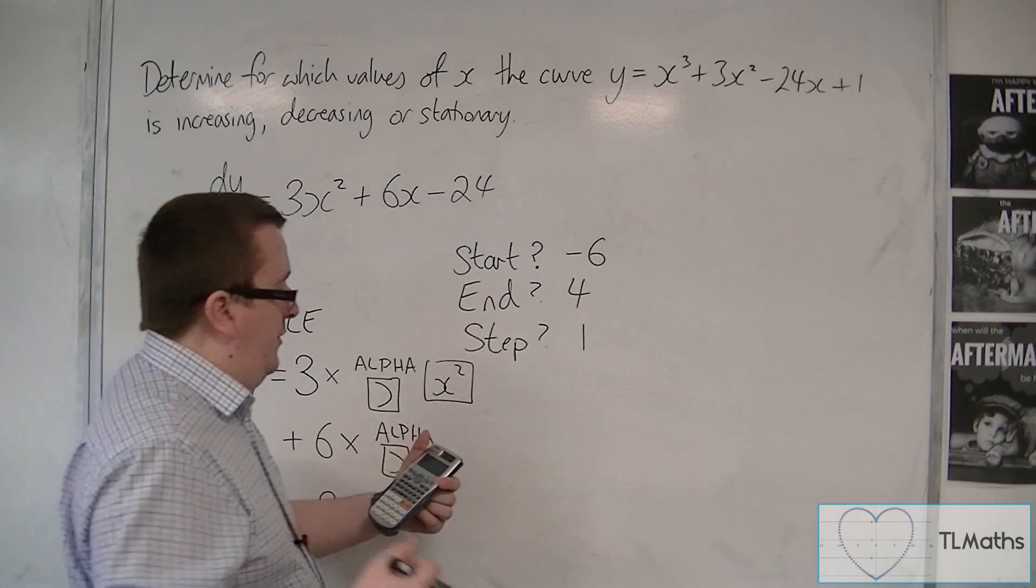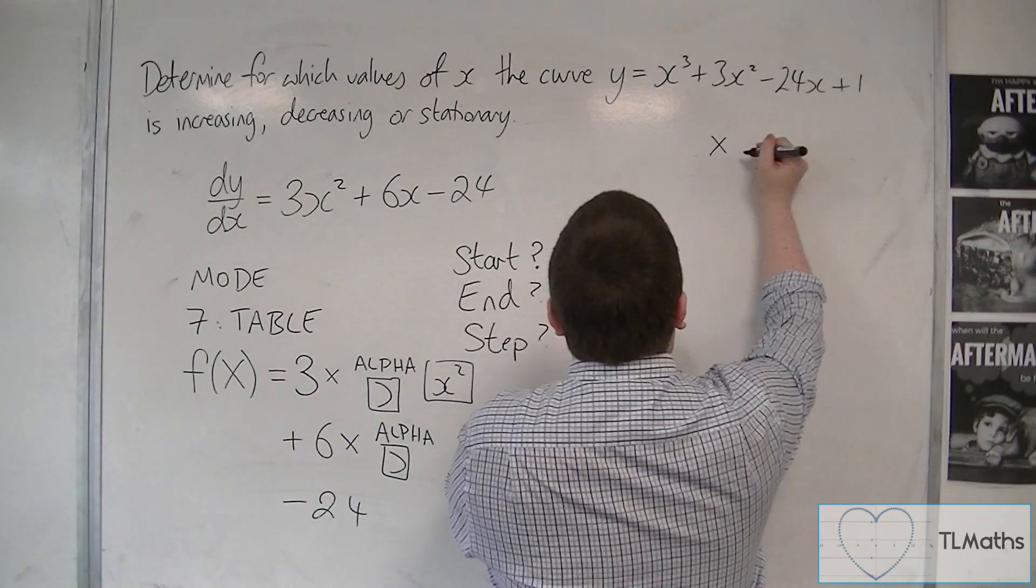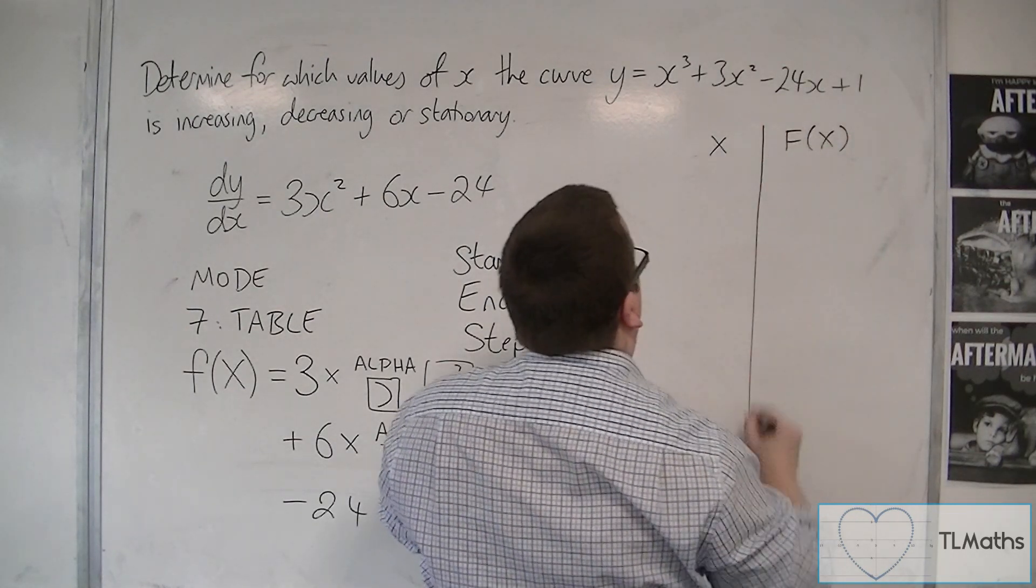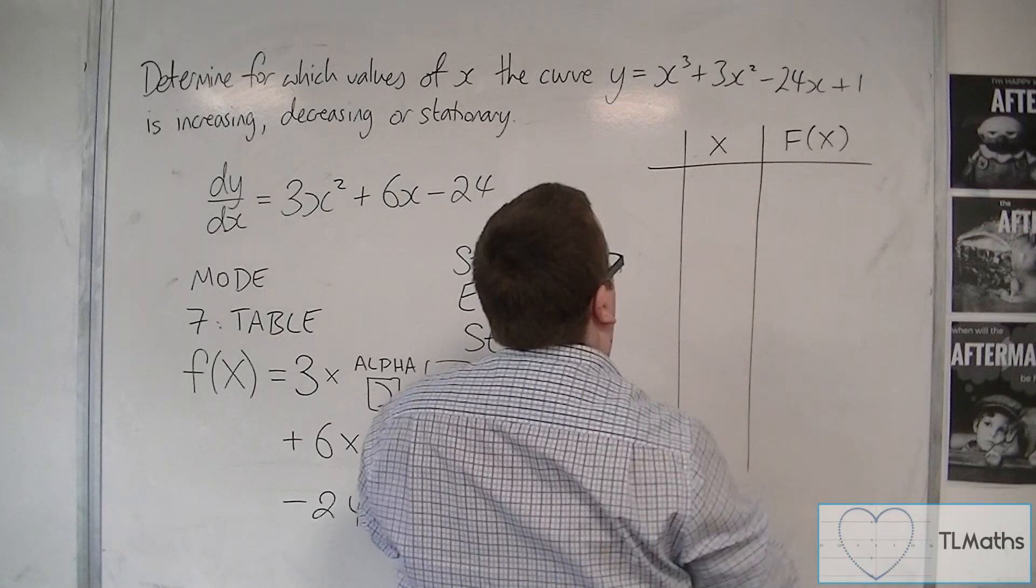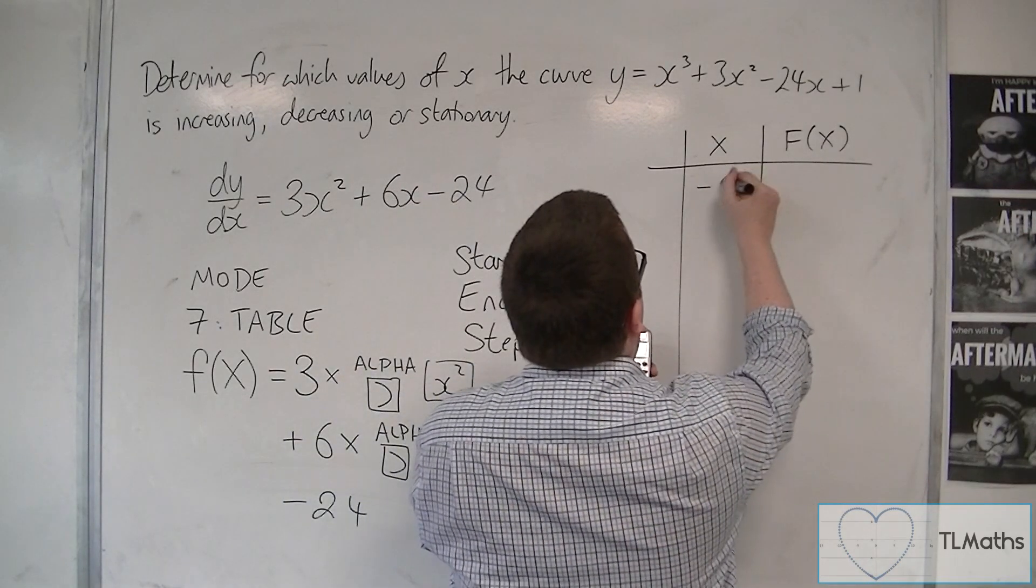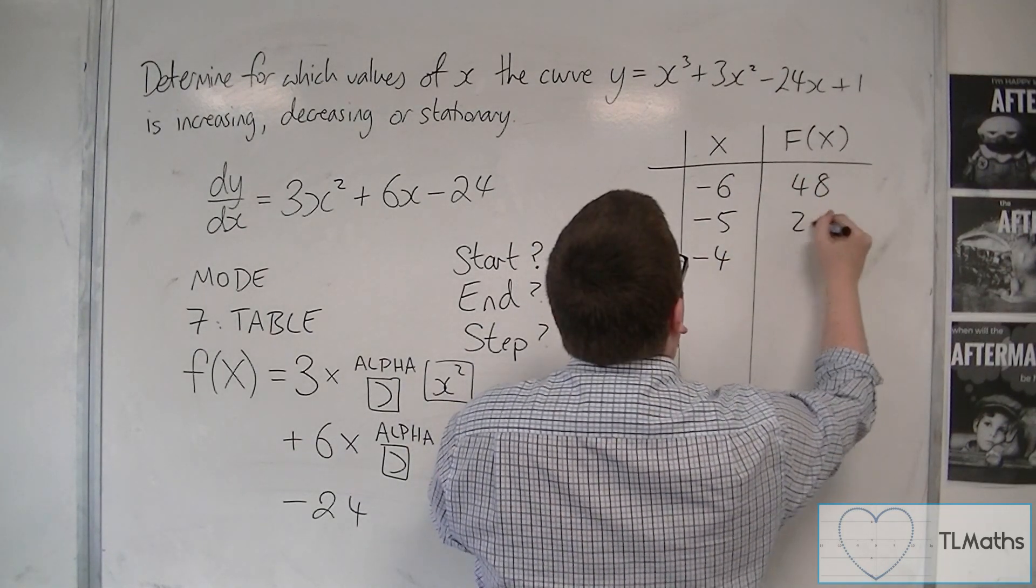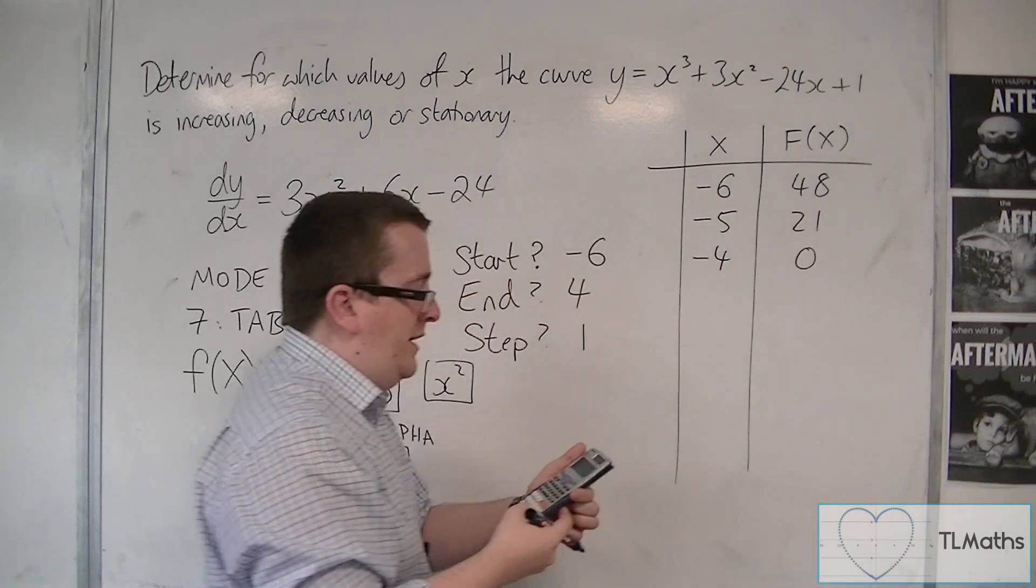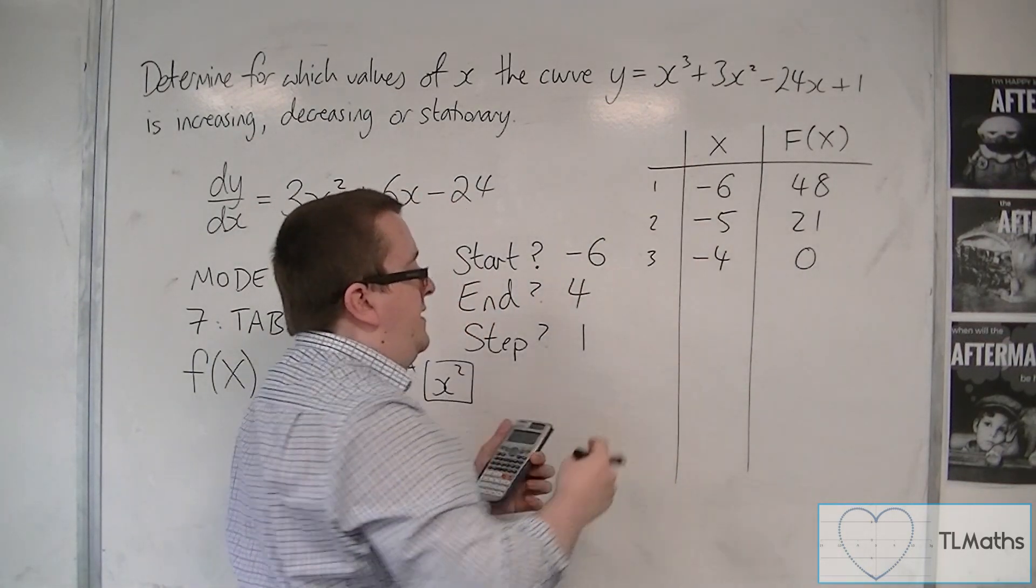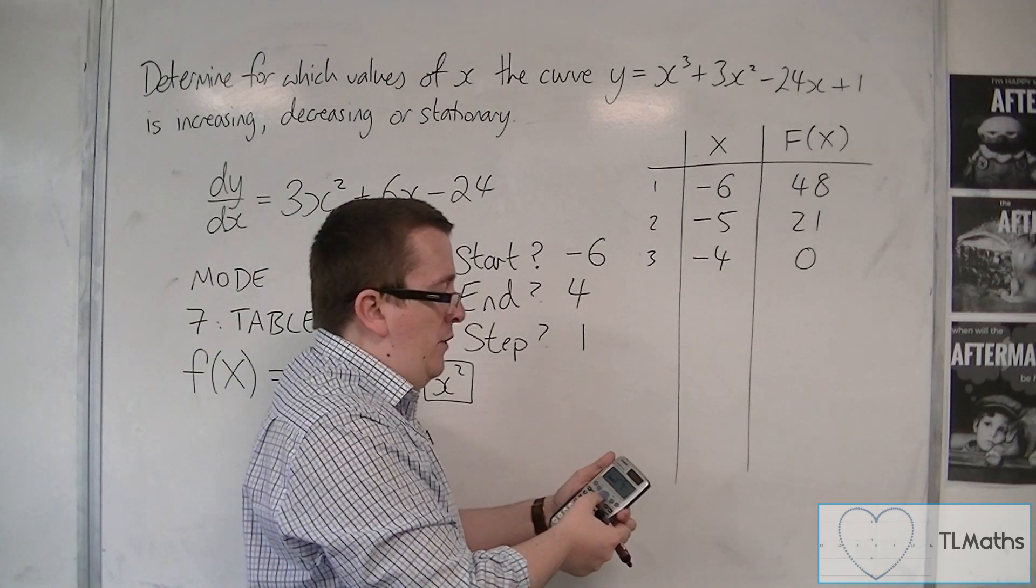And what it should now do is bring up a table of values. You'll have x, f(x). It's got 1, 2, 3 down the side. So we've got minus 6, minus 5, minus 4, 48, 21, 0. That's all I can see at the moment. There's a 1, 2, 3 there. I don't really need to look at that column. But then I can keep going down by pressing the down button.